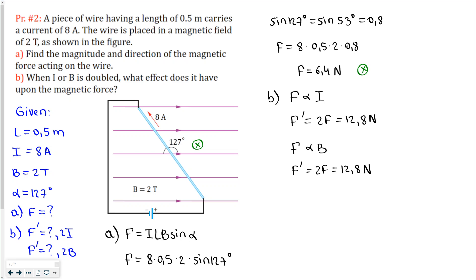You can also verify this by calculating. Instead of I, write 2I × L × B × sin(alpha), or I × L × 2B × sin(alpha). In both cases you can see that the answer is increased by a factor of 2.